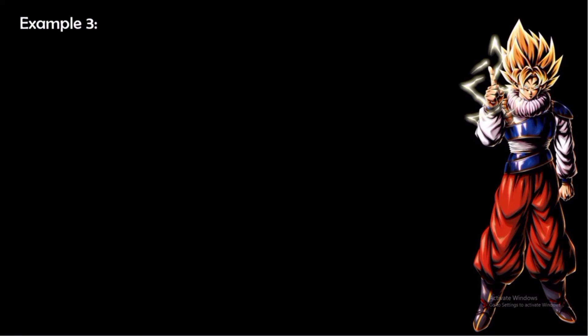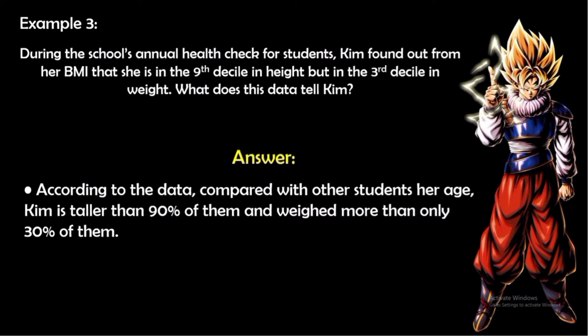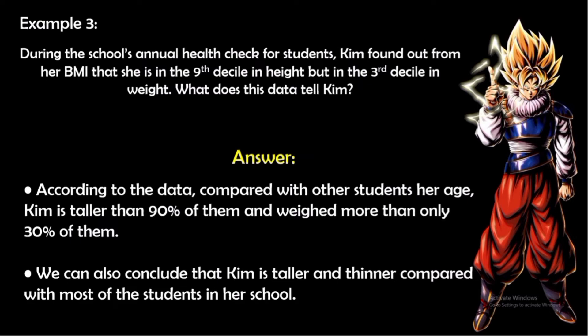Example 3: During the school's annual health check, Kim found out from her BMI that she is in the ninth decile in height but in the third decile in weight. This means that compared with other students her age, Kim is taller than 90% of them and weighs more than only 30% of them. We can conclude that Kim is taller and thinner compared with most students in her school.